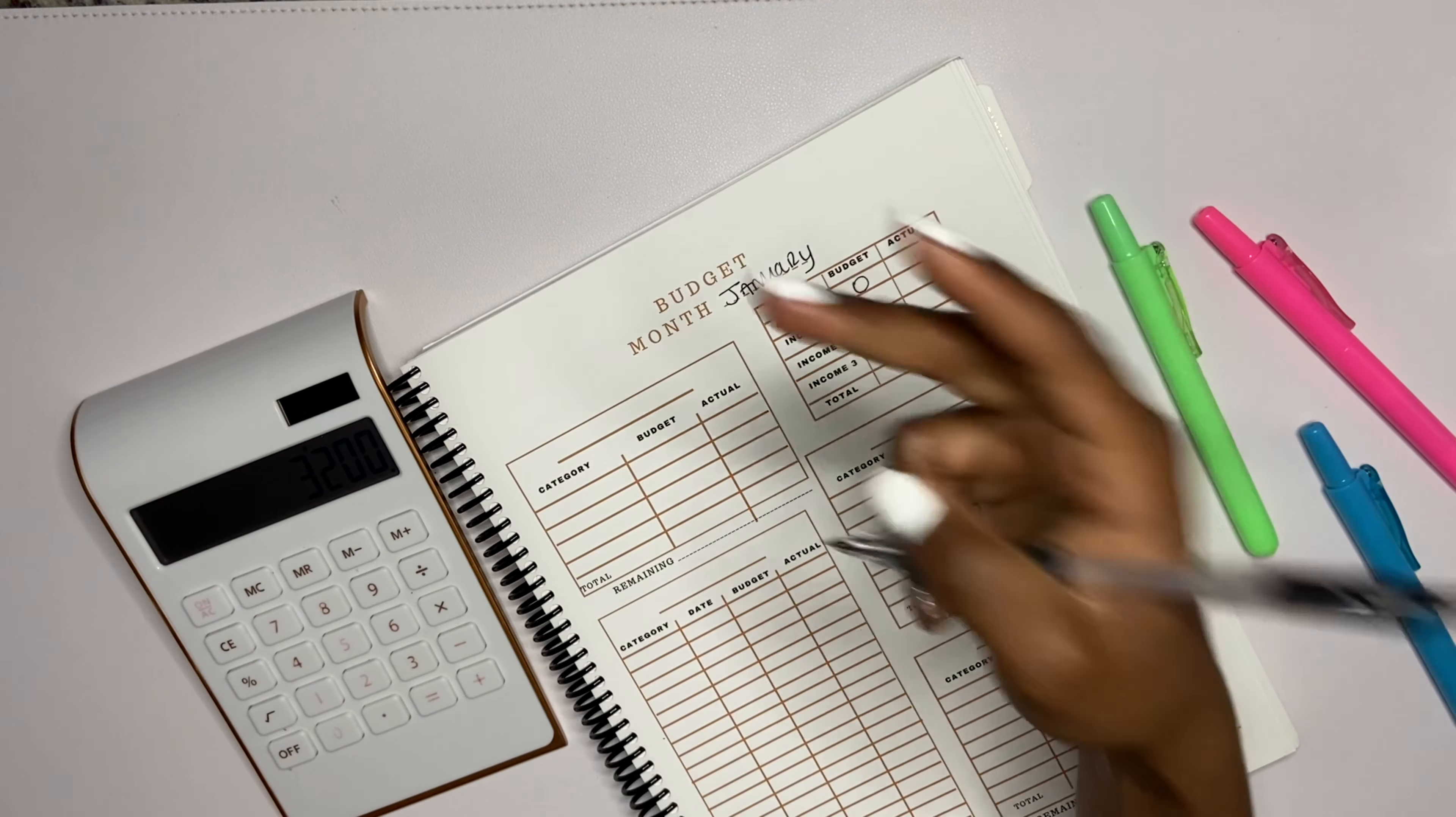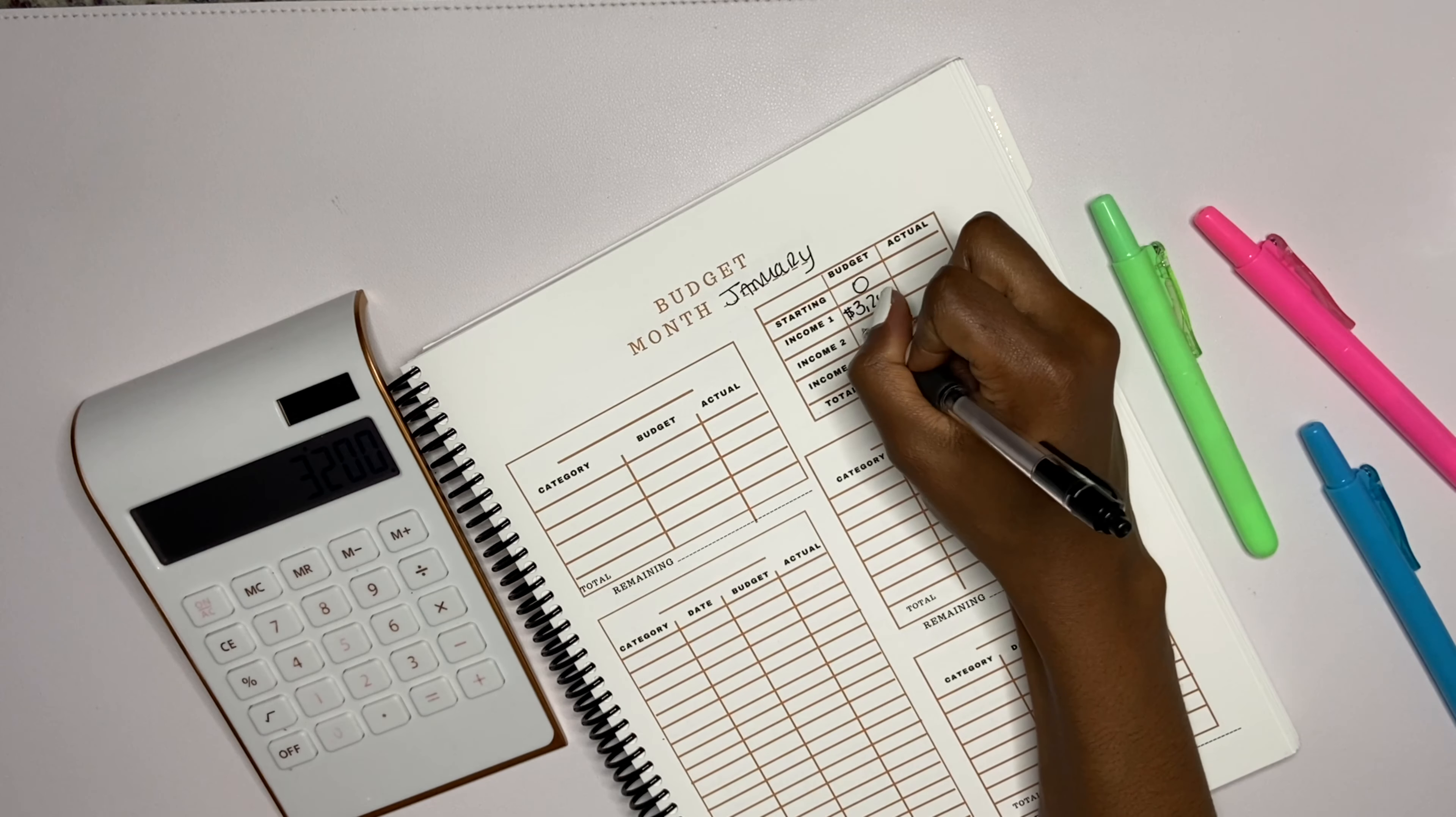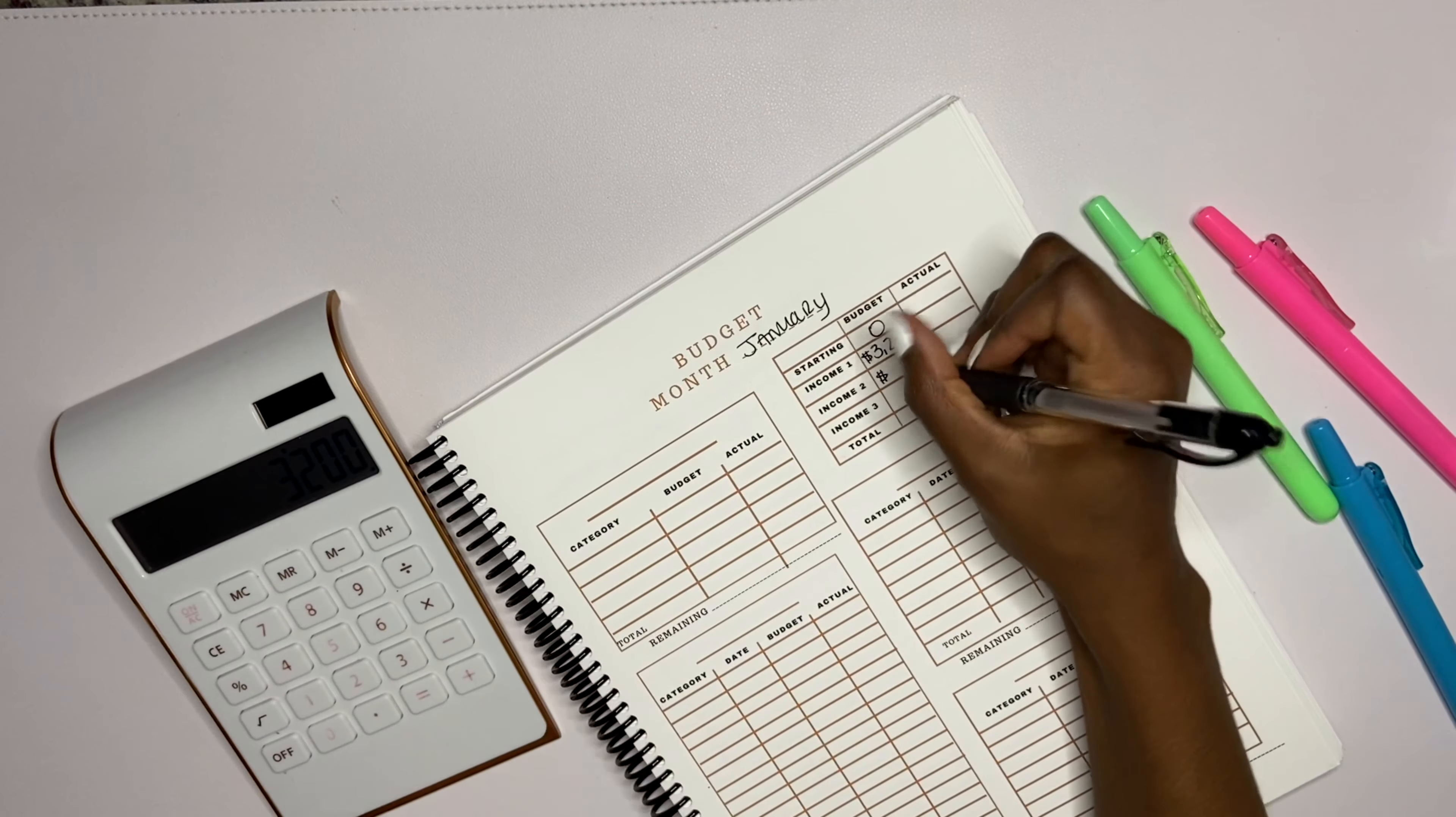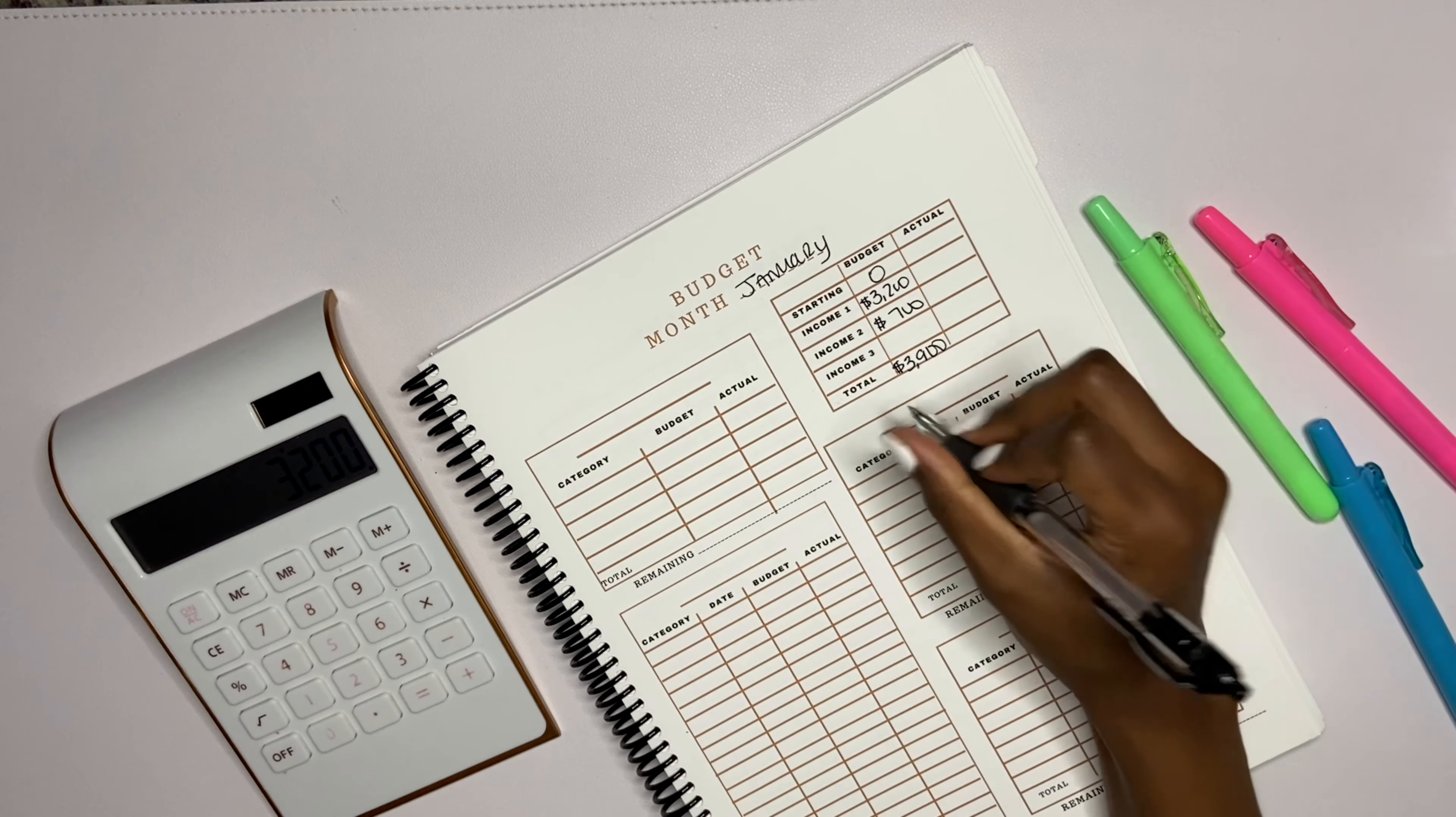I'm gonna say I'm starting off with zero. My income one, which is my full-time, I'm gonna say $3,200 because $1,600 times two - I'm gonna get paid twice this month from full-time. I want my income two, which would be my side hustle, to be $700. So that's going to be $3,900. I am budgeting out $3,900.